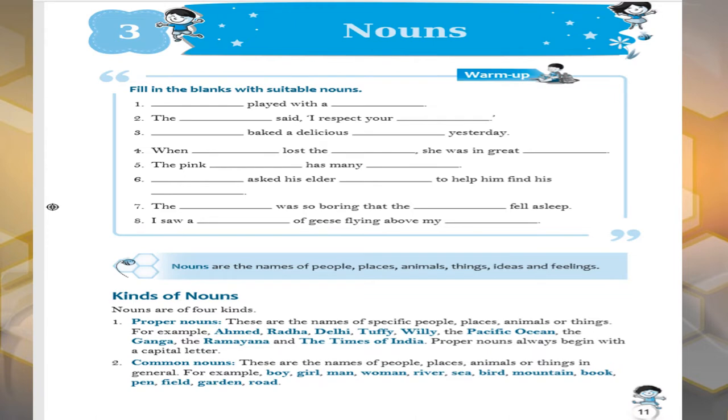The very first I am going to explain, proper nouns are the particular names. The specific name of a person, place, animals, things. Okay, like Ahmed, Radha, Ali.